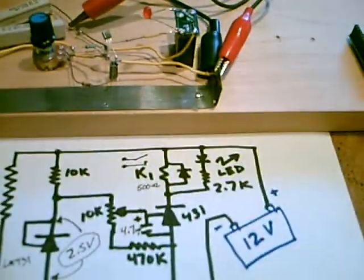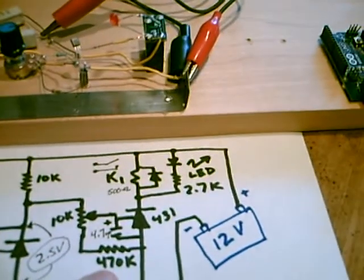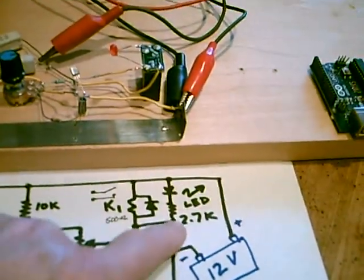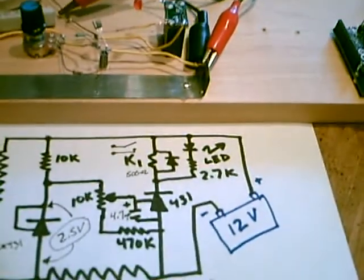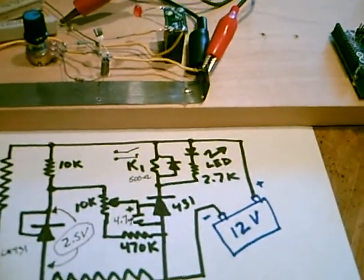So it's fairly simple to build. You have a little filter capacitor here to prevent false trips, a little display LED, and a relay you want to have about 500 ohms or more.